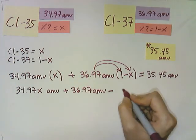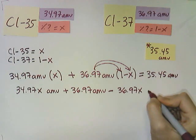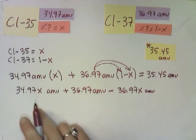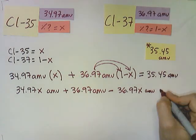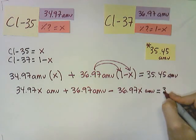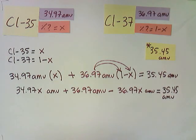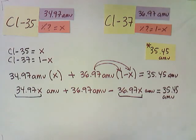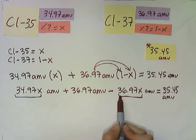So I would have first 36.97 times 1 is the same number, AMUs, minus this times x, which is 36.97x, and my units are AMUs. Now don't get confused with the x will be a variable, and I'm just keeping units here. This is equal to 35.45 AMUs. Now that I have this, I see that I have the x variable two times, so I can do the subtraction.